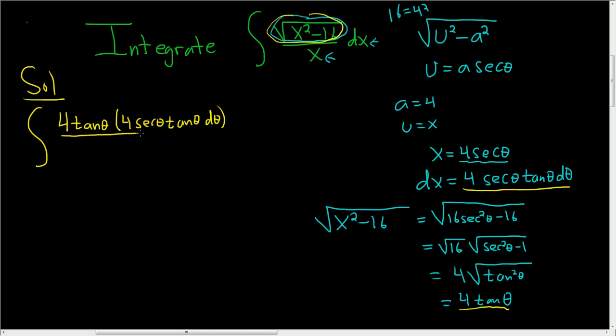It's all being divided by x, and we said x was 4 secant theta. We lose the secants, we lose a 4, and we're left with 4 tangent squared theta d theta.